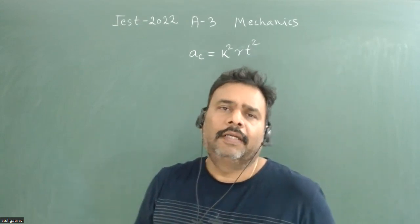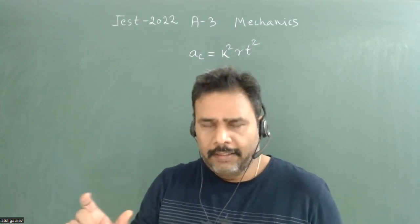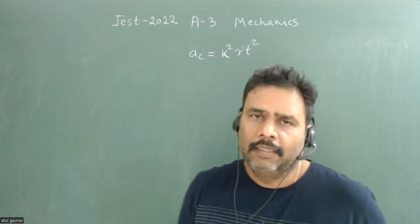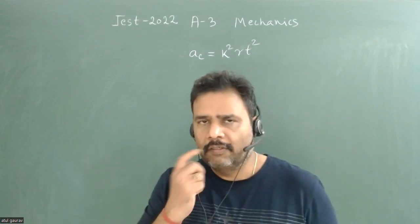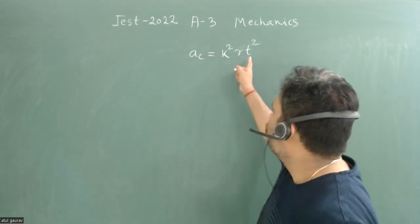In this problem, a particle is moving in a circle of radius r. This radius is fixed and constant, and the centripetal acceleration is a function of time.